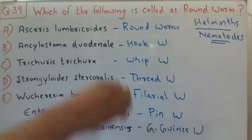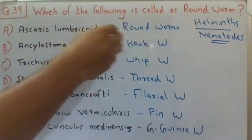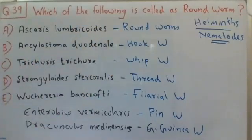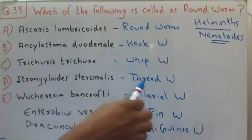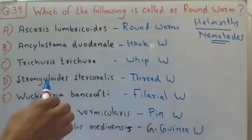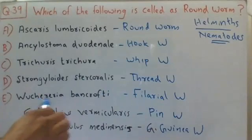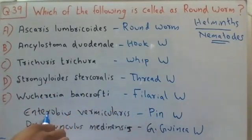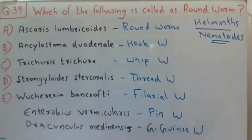So all these nematodes and their corresponding names: Roundworm — Ascaris lumbricoides. Hookworm — Ancylostoma duodenale. Whipworm — Trichuris trichiura. Threadworm — Strongyloides stercoralis. Filarial worm — Wuchereria bancrofti. Pinworm — Enterobias vermicularis. And guinea worm — Dracunculus medinensis.